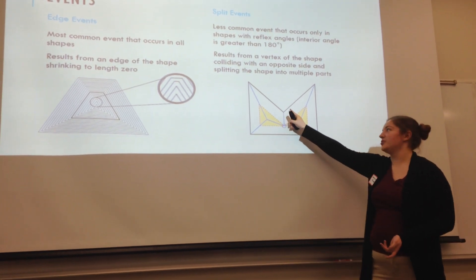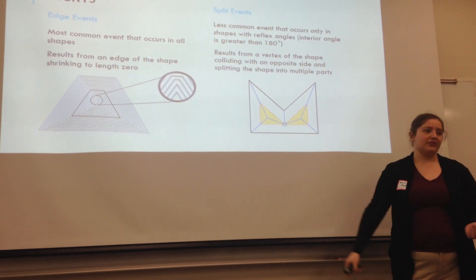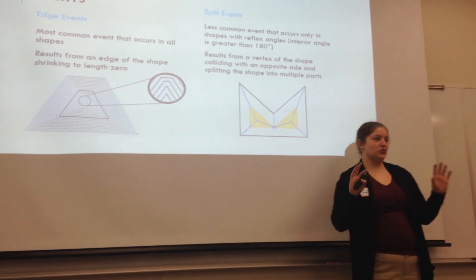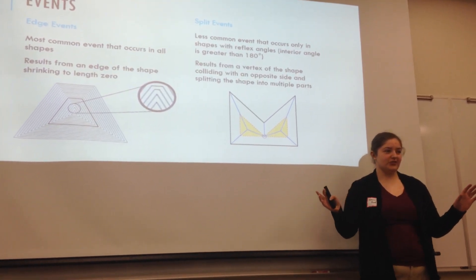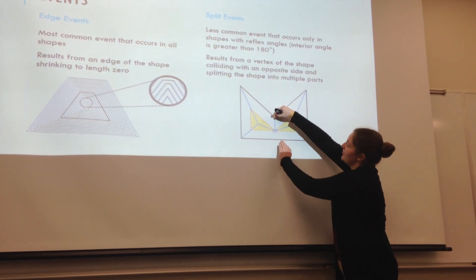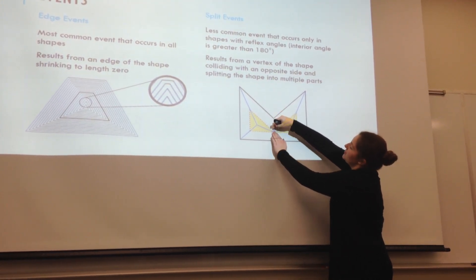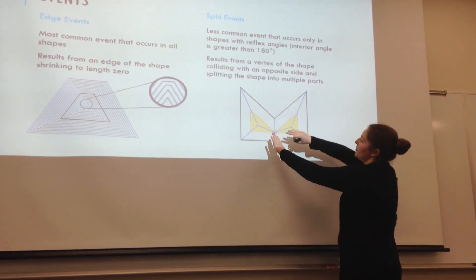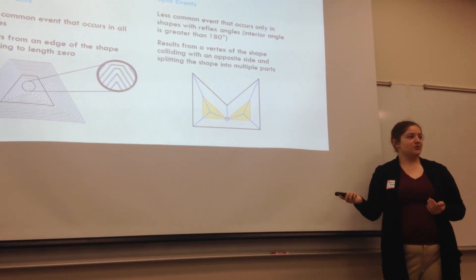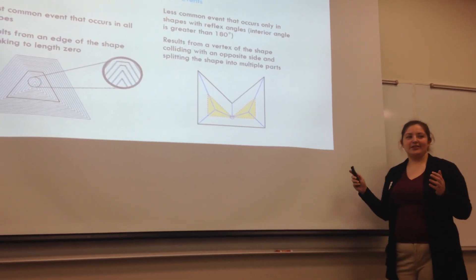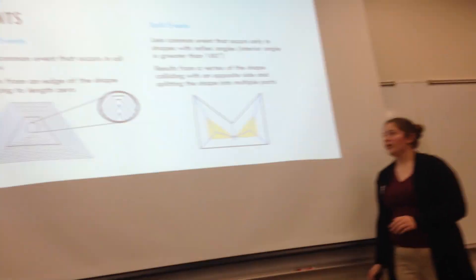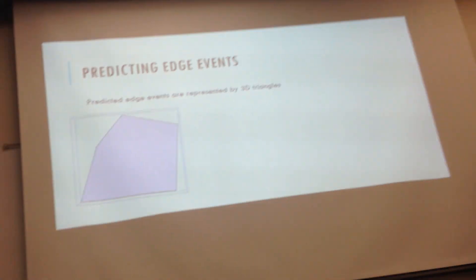The second type is called a split event. These occur less often and only in shapes that have reflex vertices — vertices greater than 180 degrees. A split event is where the shape splits into two separate parts: while shrinking, a vertex collides with a line and the shape breaks into two triangles. We're currently working only with convex shapes and edge events, since reflex angles make things significantly more complicated.